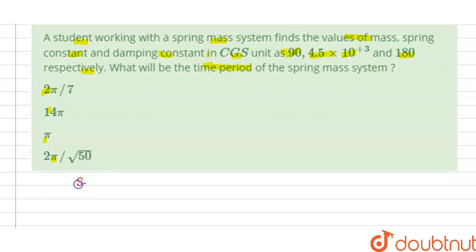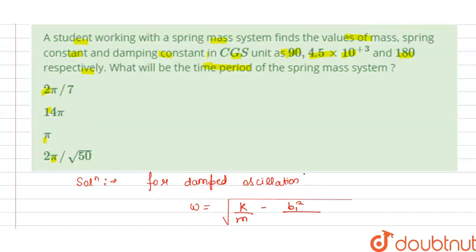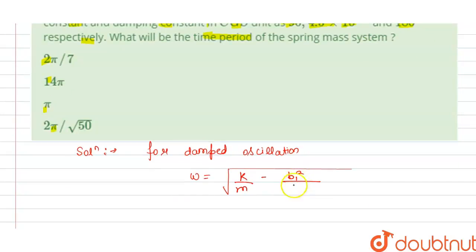So the solution of this question is: we know that for the damped oscillation, we have omega equals to under root k, that is our spring constant, divided by m mass, minus b1 square, that is our damping constant, divided by 4 times mass square.